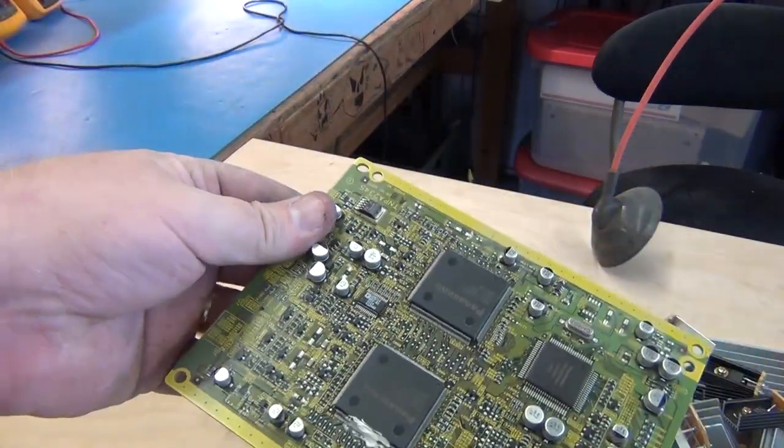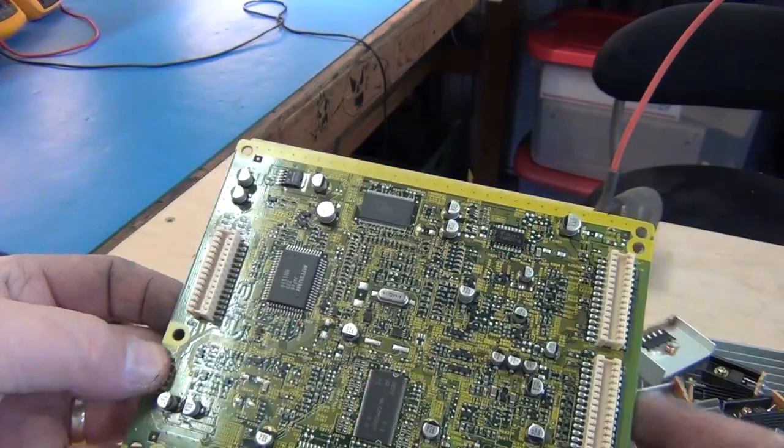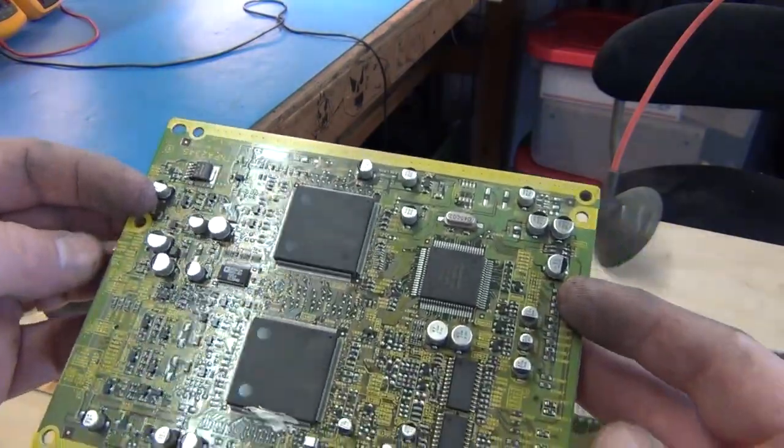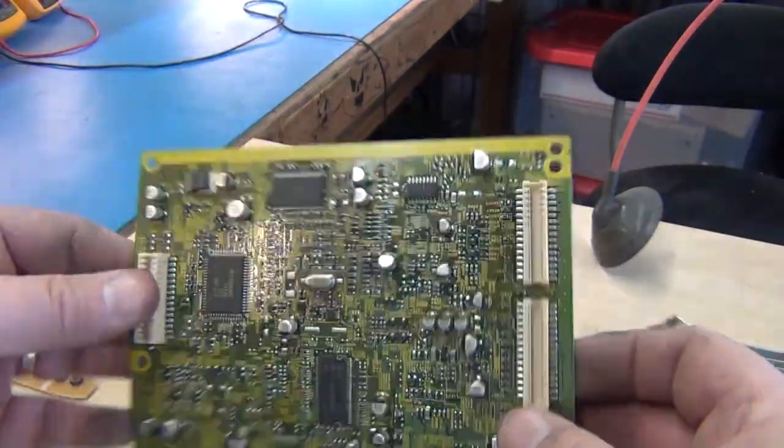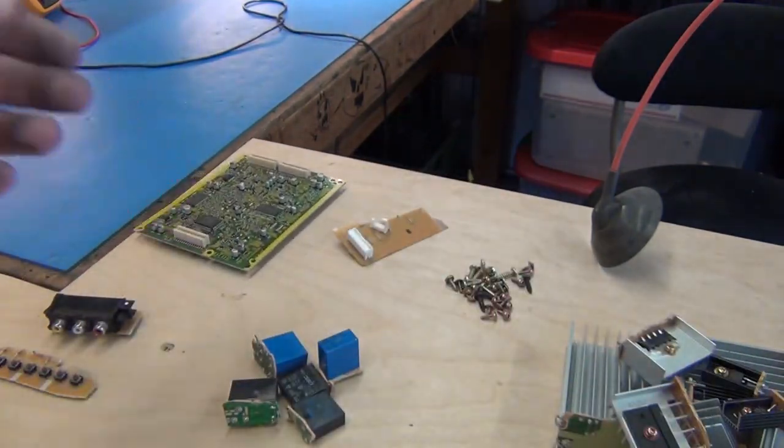I kept this not because I really want anything on it, but it's just very compact. It has lots of little surface mounts if I ever need them. And it's a good training board for doing the surface mount soldering and desoldering. So that's a nice little board to keep around.